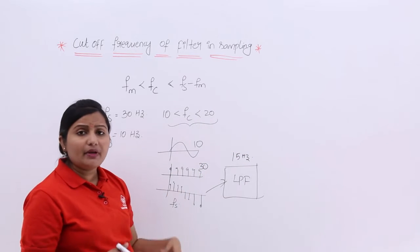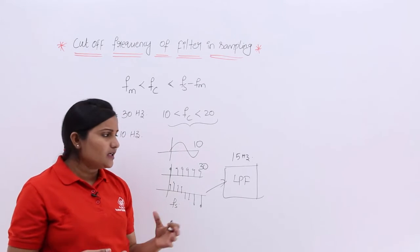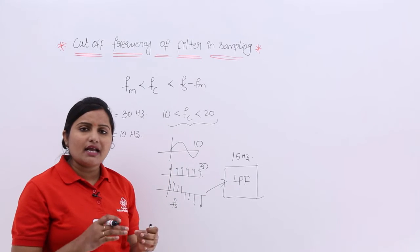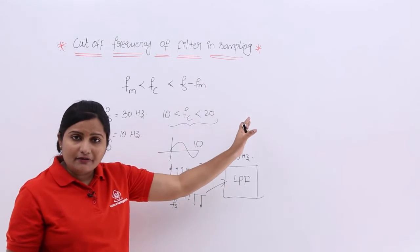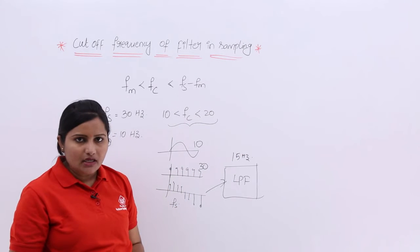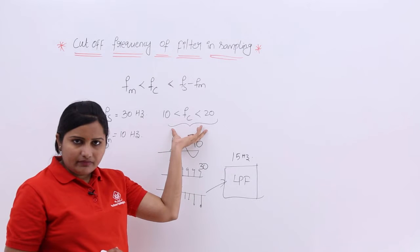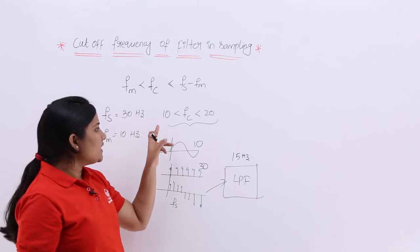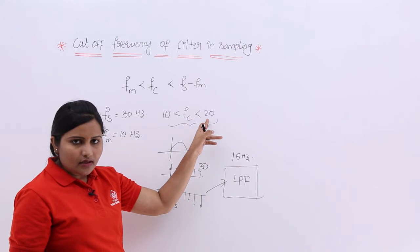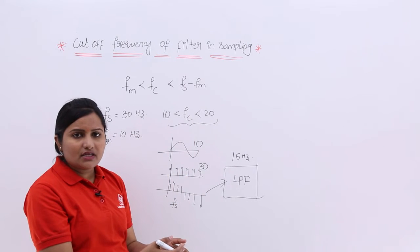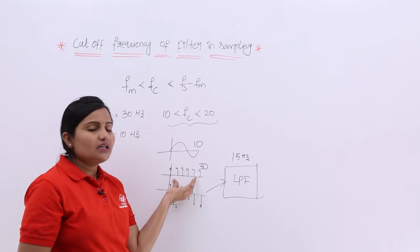If you exceed this range — for example, if you consider 25 Hz or 35 Hz — then any message components which are in that higher range may enter, and noise may come. The problem with considering a higher frequency than this range is that noise will enter and other message components can also enter. Even within the valid range of 10 to 20 Hz, other frequency components from other signals having 15 or 20 Hz may enter, but this is an acceptable range for this FS.